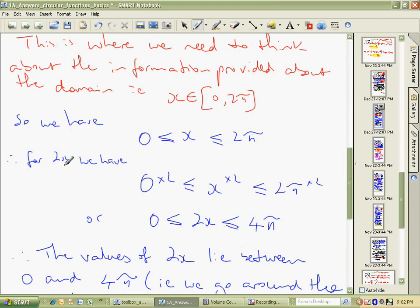For 2x then we would have, we just multiply because x is multiplied by 2, we multiply all this by 2, we end up with that 0 being still 0, the x becoming 2x, the 2π becomes 4π.